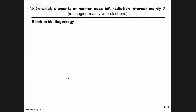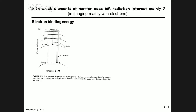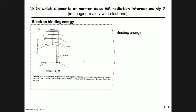What are the elements of matter that electromagnetic radiation mainly interacts with? In imaging, it's mainly electrons. So we look at the structure of an atom: electrons have binding energy in different shells. Taking tungsten with atomic number 74 as an example — in the K shell the binding energy is minus 70 kilo electron volts, in the M shell it's minus 2.5 kilo electron volts, and near zero are the valence electrons. The valence electrons are what chemists care about for chemical reactions; for our course we care mainly about the inner shell electrons.